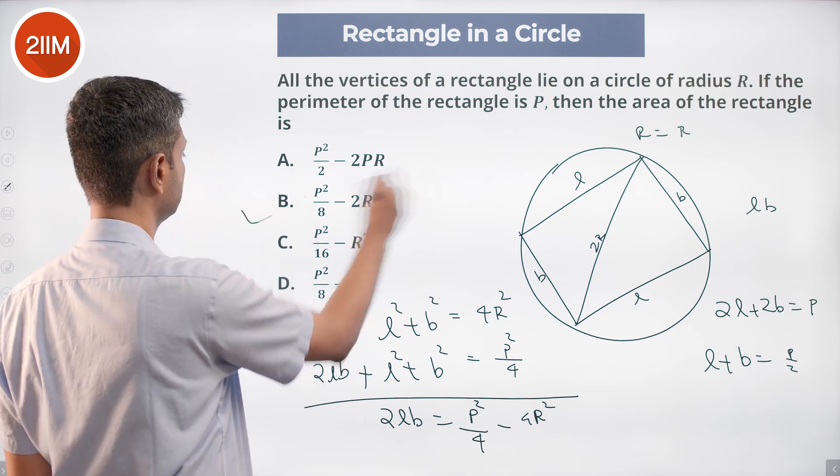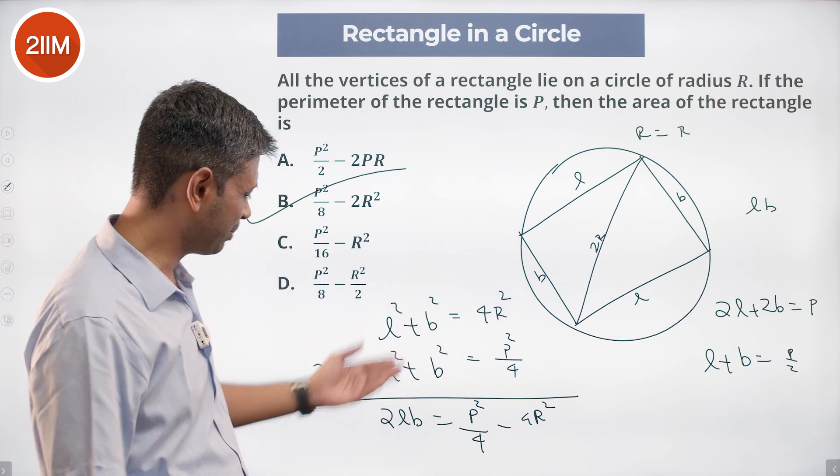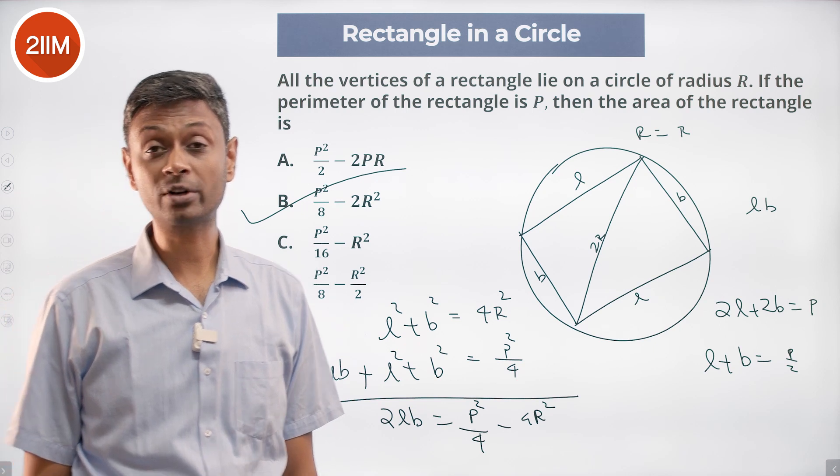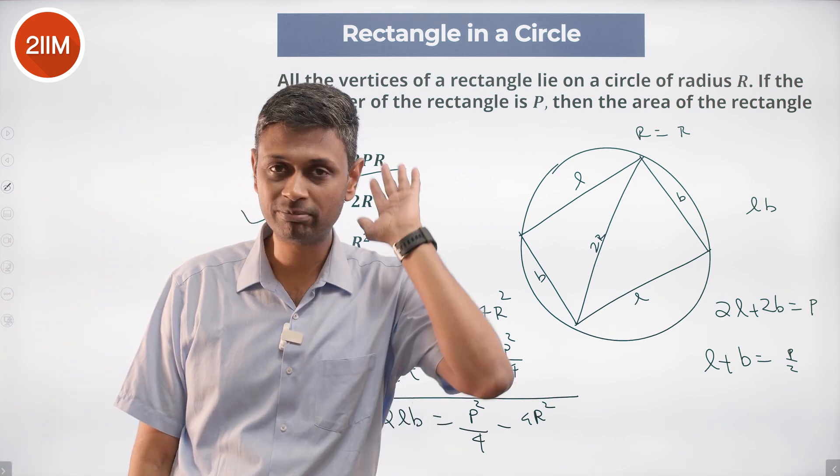Divided by 2, half of this: P square by 8 minus 2R square. Nice juicy question, should just be knocking it off.